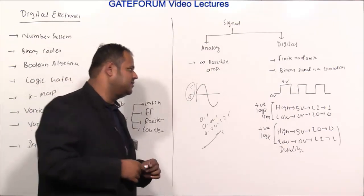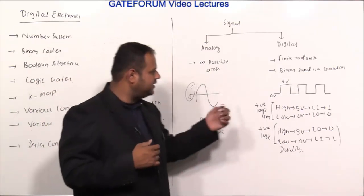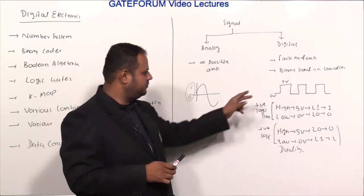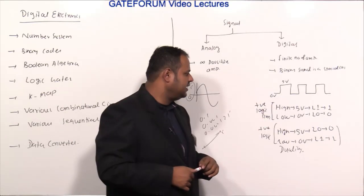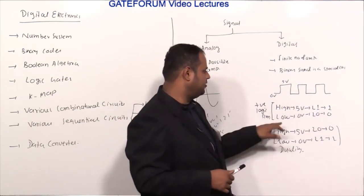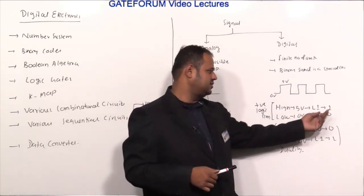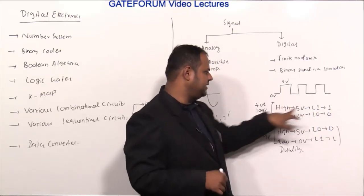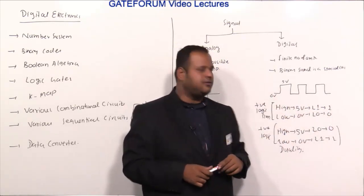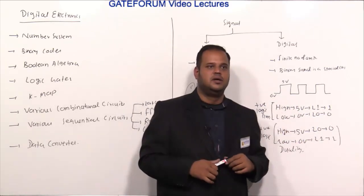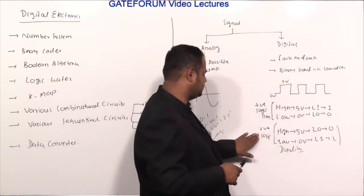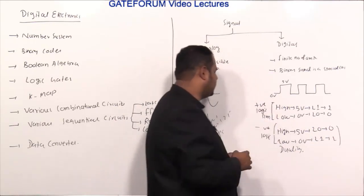It will be much more convenient to work with these systems if we give a nickname to this. The renaming is: if the high level, which is 5 volts, I call it logic 1 or simply 1, and the low level, which is 0 volts, I call it logic 0. If I use such renaming where high is 1 and low is 0, I call this a positive logic system. If it is reversed — if high is taken as 0 and low is taken as 1 — I call this a negative logic system.